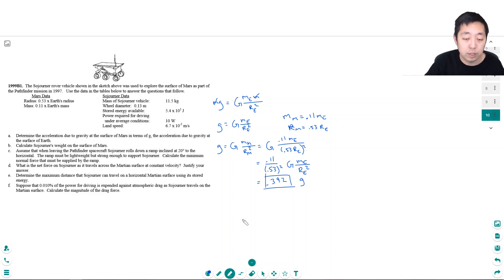So 0.392. Oh, include the g in there. 0.392 times g. Okay, that's part A.